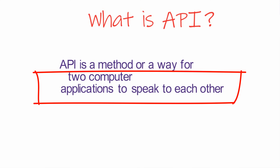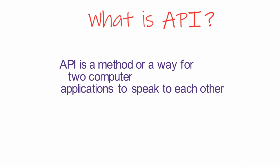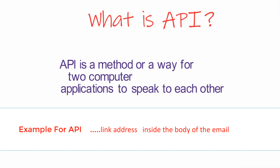Let me give an example to help you understand APIs better. Suppose you receive an email with a link in the body. When you click that link, it opens a web browser and takes you to a website. That task is performed using an API — it tells your device to open the web browser and navigate to that web address.